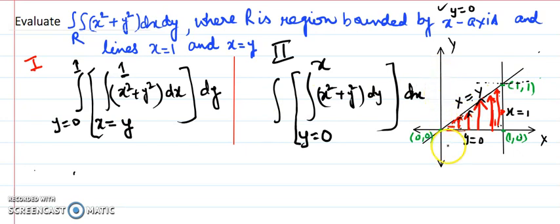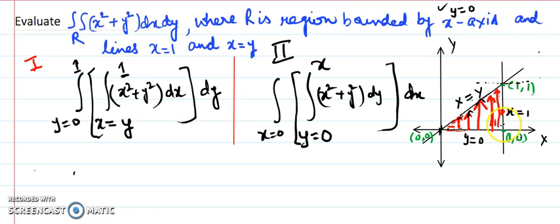For the x limits, I look at the same diagram: the minimum value of x is 0 since the origin (0, 0) is a corner, and the maximum value of x is 1 as seen from the points (1, 0) and (1, 1).